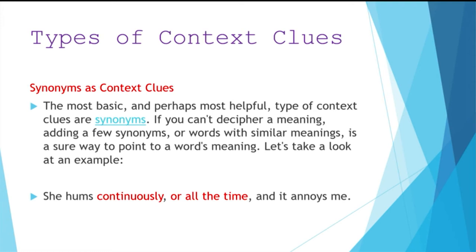The most basic and perhaps most helpful type of context clues are synonyms. If I don't know a word, I may know another word that is related to it. If you can't decipher a meaning, adding a few synonyms or words with similar meanings is a sure way to point to a word's meaning. For example: she hums continuously, or all the time, and it annoys me. So the writer gives you a synonym — all the time — so you know continuously means something done all the time.